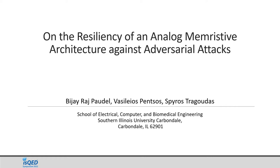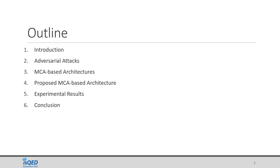Here is the outline of my presentation. First, I'll introduce the topic, present the problem and existing solutions, and our approach. Then I'll present the background on adversarial attacks and existing memristor crossbar array based architectures. I'll talk about the proposed enhancements to existing analog memristor crossbar array architecture, present experimental results on various adversarial attacks on different datasets and deep learning architectures, and finally conclude.